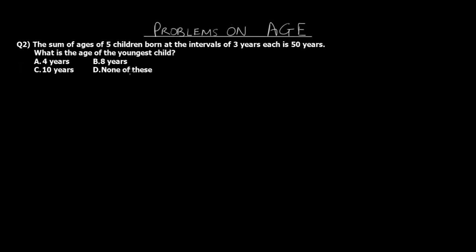Question 2: The sum of ages of 5 children born at intervals of 3 years each is 50 years. What is the age of the youngest child? They have not given us any actual age but a relation between the sum of ages of 5 children born at a regular interval of 3 years. For example, if the first child is born in 2017, the next would be born in 2020, and so on.